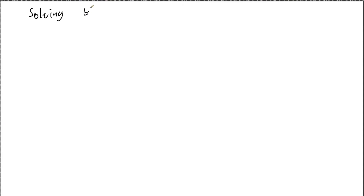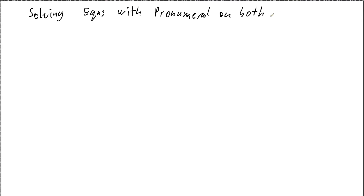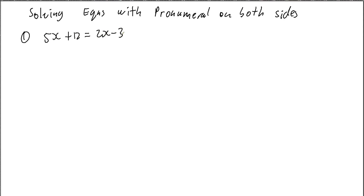I'm looking at solving equations with the pronumeral on both sides. So what we're looking at when we've got the pronumeral on both sides is where there's some sort of an x term on the left side of the equation and an x term on the right side of the equation. So if we look at our first example, I'm looking at something like 5x plus 12 equals 2x minus 3. So I've got an x over here and I've got an x over here and I've got the equal sign in the middle.